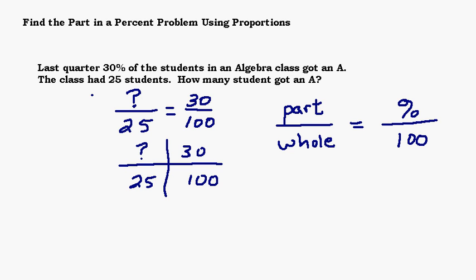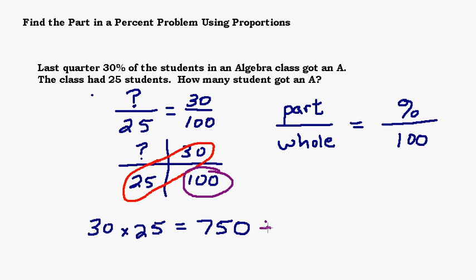So to figure this out, we're going to multiply 25 times 30. So we have to do 30 times 25, and that would be, three times 25 is 75, and then we have a zero, so 750. And then whatever this number is right here, that's across from your question mark, you always divide by that. And this one we can do in our head. When you divide by 100, you just move the decimal two places to the left.